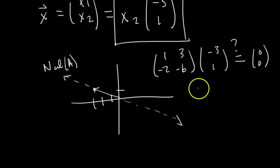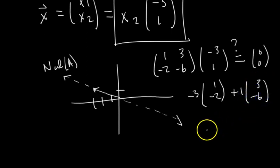Well, who remembers how to do matrix times a vector? It's a linear combination of the columns of the matrix, where the weights are the entries in the vector. So we get negative 3 times 1, negative 2, plus 1 times 3, negative 6. Does that equal the 0 vector? Well, we get negative 3 plus 3. So the first entry is 0. Good. And for the second entry, we get 6 minus 6. So we get 0. Perfect. Checks out.